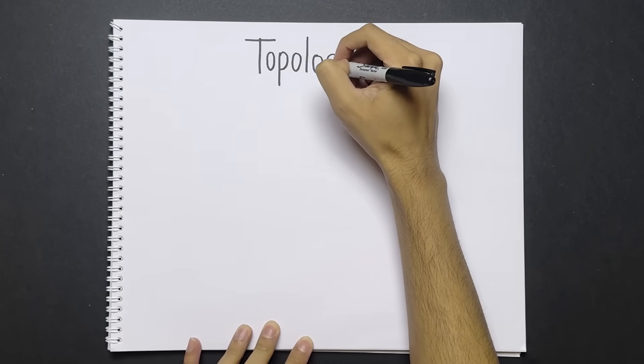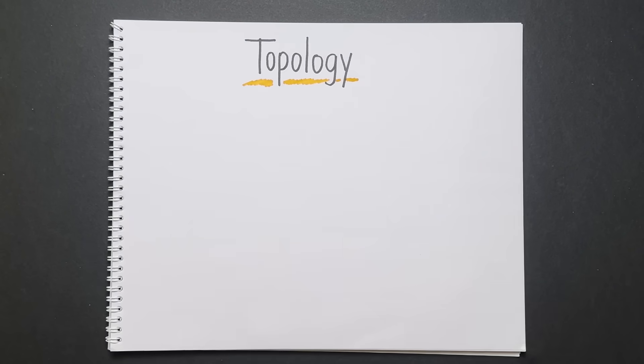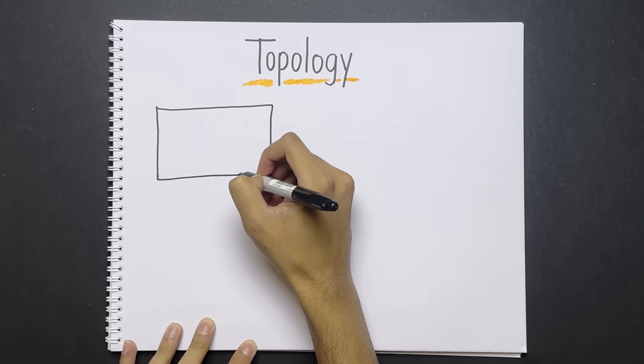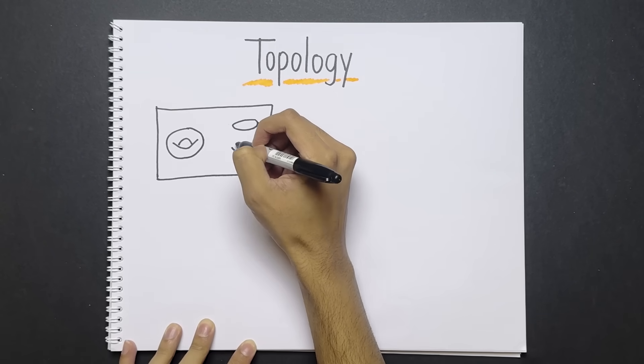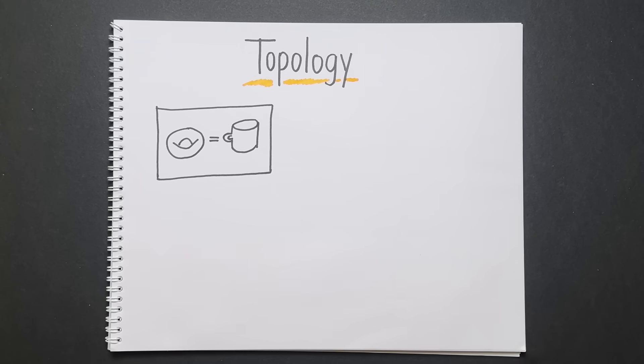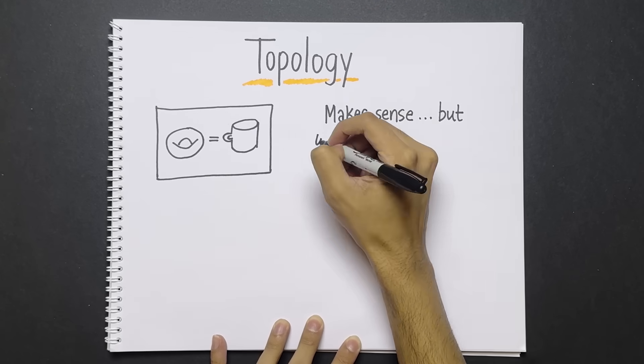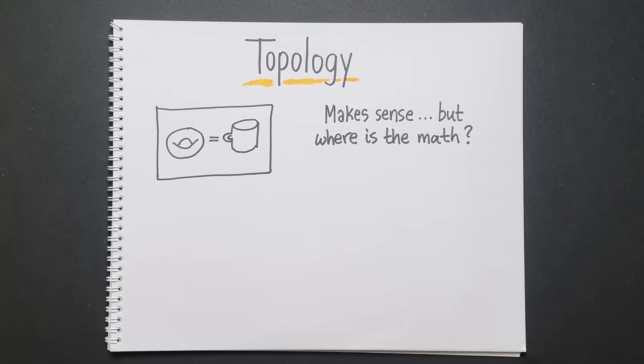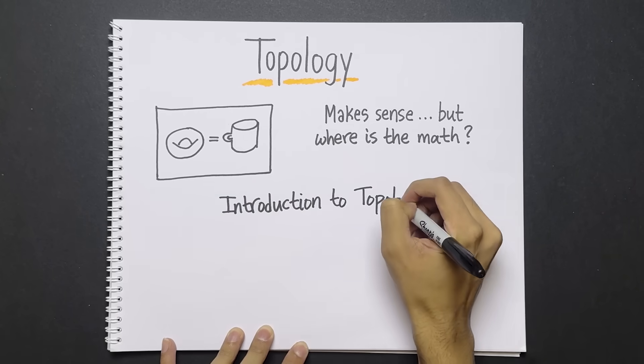Growing up, topology was one of those subjects that I was endlessly curious about. But whenever I googled YouTube videos trying to learn it, I only ever saw vague analogies about donuts and coffee cups being the same thing. And this always left me thinking, fine, but where's the math? So to learn it, I ended up taking a course about topology.